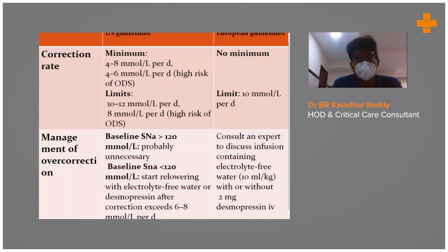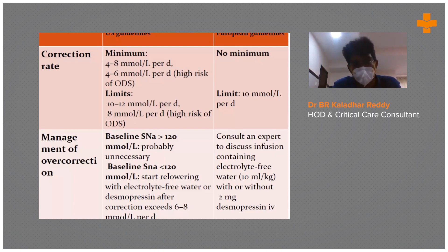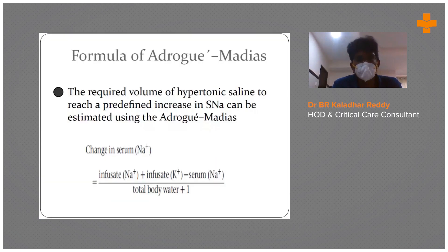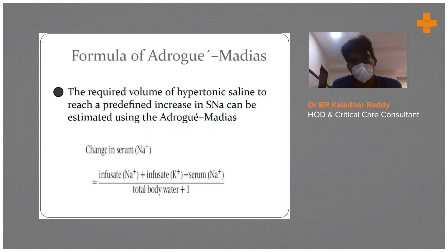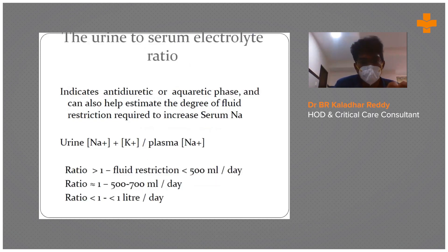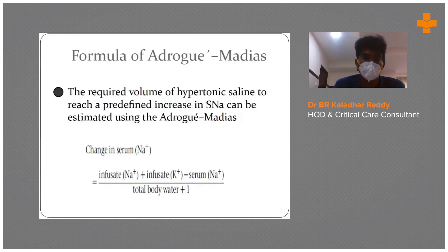The other method is the Adrogue-Madias formula, which calculates the change in serum sodium. The formula is: (infusate sodium + infusate potassium − serum sodium) ÷ (total body water + 1), where total body water = 0.6 × body weight. For example, with normal saline, infusate sodium is 150 mEq, potassium is 0. This gives you the expected change in serum sodium per liter of infusate.